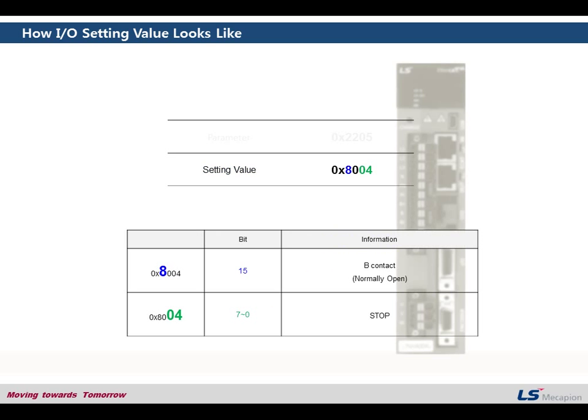The number 8 in this setting, the value 8 means the B contact which is normally closed. And this is the bit 15 in hexadecimal digit. So bit 7 to 0 in hexadecimal digit, which is the number 0 and 4 in this case means stop function.